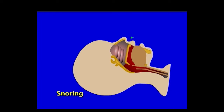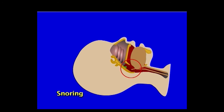When muscle tone is lost, the epiglottis, tongue, and other pharyngeal tissues fall backward, blocking the larynx and obstructing breathing. A good example of this from everyday experience is snoring.